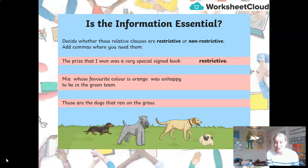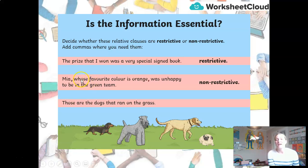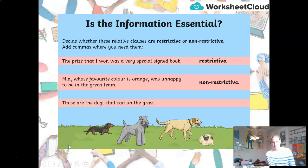The first one is a restrictive relative clause — 'that I won' is very important, essential information, so I'm not going to put a comma there. The second — well done if you said it's non-restrictive; it needs commas: 'Mia, whose favourite colour is orange, was unhappy to be in the green team.' Not essential information. And the last — 'those are the dogs that ran on the grass' — that is restrictive; no commas are needed. 'That ran on the grass' is essential to the sentence.